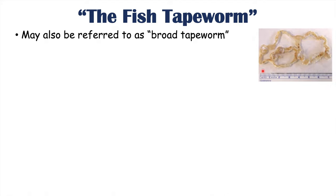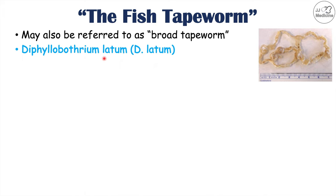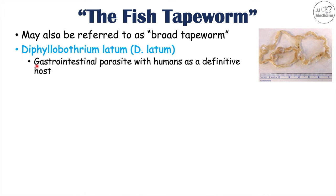So what is the fish tapeworm? The fish tapeworm may also be referred to as the broad tapeworm. Like other tapeworms, the name comes from its appearance — it can look like a piece of tape, flat in appearance. Although the title of this lesson is the fish tapeworm, there are actually multiple species that can infect humans. The most common is Diphyllobothrium latum, or D. latum, a gastrointestinal parasite for which humans are the definitive host.